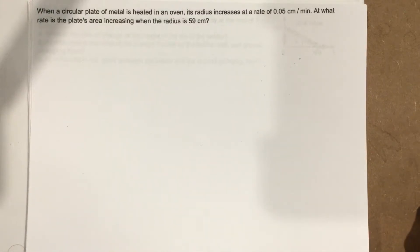This is problem number three from section 310. In this problem, when a circular plate of metal is heated in an oven, its radius increases at a rate of 0.05 centimeters per minute. At what rate is the plate's area increasing when the radius is 59 centimeters?